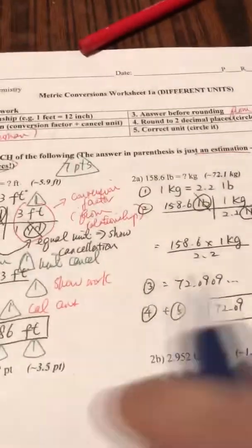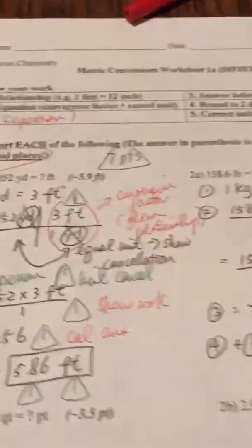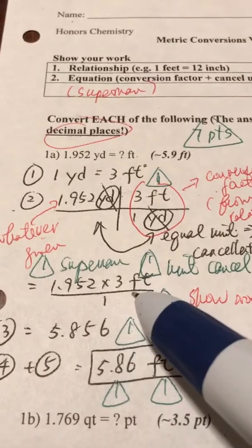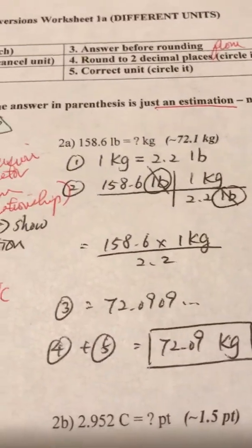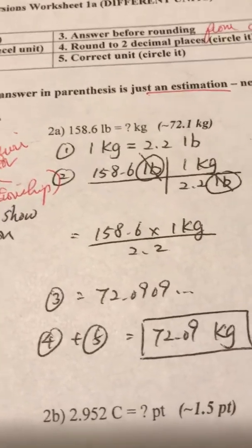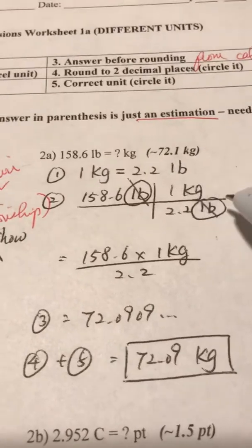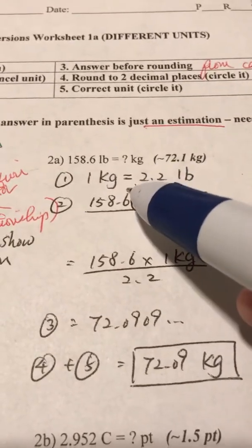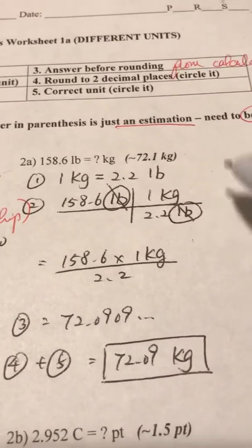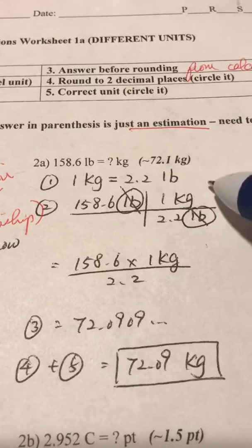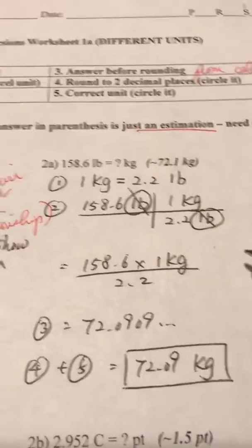The example on the right side is a similar setup, but notice that the left is multiplication and the right is division. The key is: don't try to remember whether to multiply or divide — just use unit cancellation. Whichever unit from the relationship matches the given unit goes on the bottom of the conversion factor, and whatever is left over goes on top. Circle the matching units and cancel. You must always show unit cancellation.